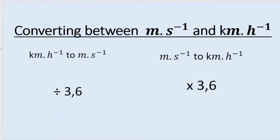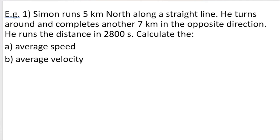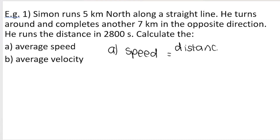Now let's do an example of how to calculate speed and velocity, and you will very quickly see the difference between these two physical quantities. Simon runs five kilometers north along a straight line. He turns around and completes another seven kilometers in the opposite direction. He runs this distance in 2,800 seconds. We want the average speed and the average velocity. Speed is equal to distance divided by time. Speed is a scalar, so is distance — our answer does not need a direction.